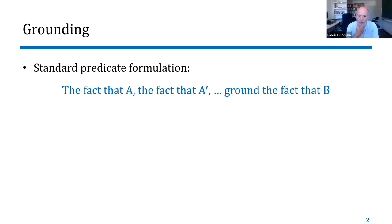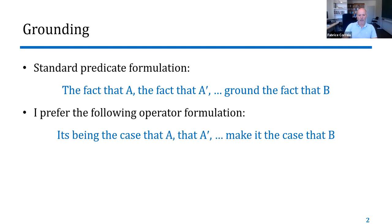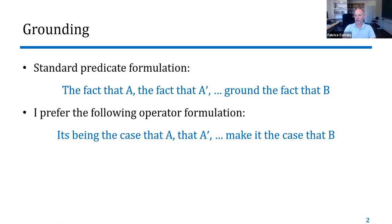A few words about grounding first. The most standard formulation of grounding claims invokes a predicate. We say things like 'the fact that A, the fact that A prime, together ground the fact that B.' For several reasons, I prefer the operator formulation, and more particularly: 'it's being the case that A, it's being the case that A prime, and so on, make it the case that B.' Another operator formulation people sometimes use is the 'because' formulation. I don't like that because it links grounding too closely with explanation — it takes grounding to be a form of explanation. I prefer to distinguish between grounding on one hand and grounding explanations on the other. That's why I prefer this particular way of formulating grounding claims using an operator.